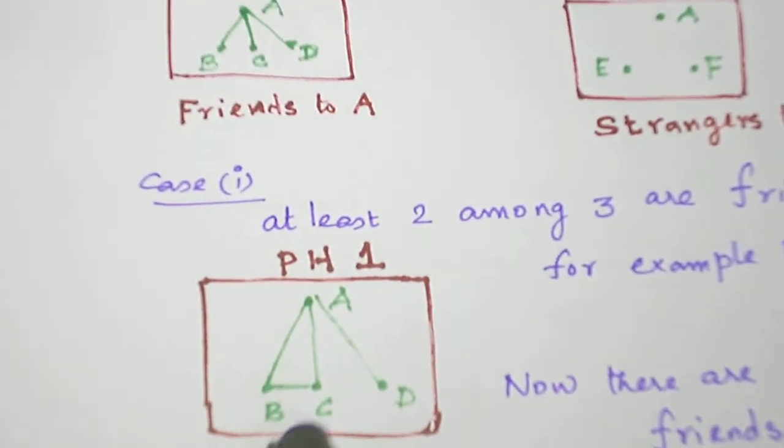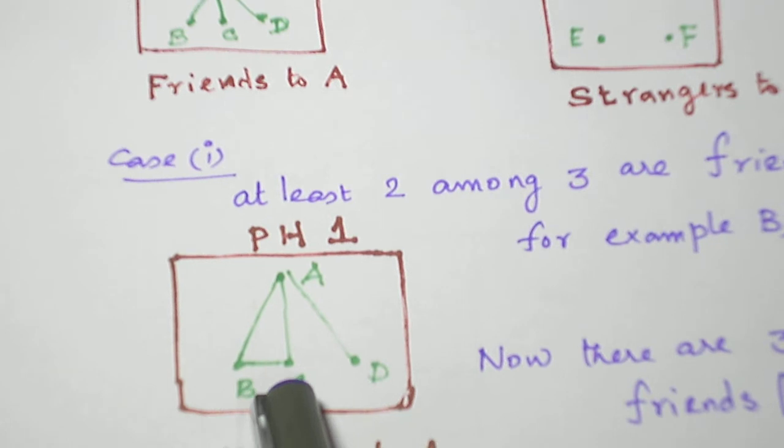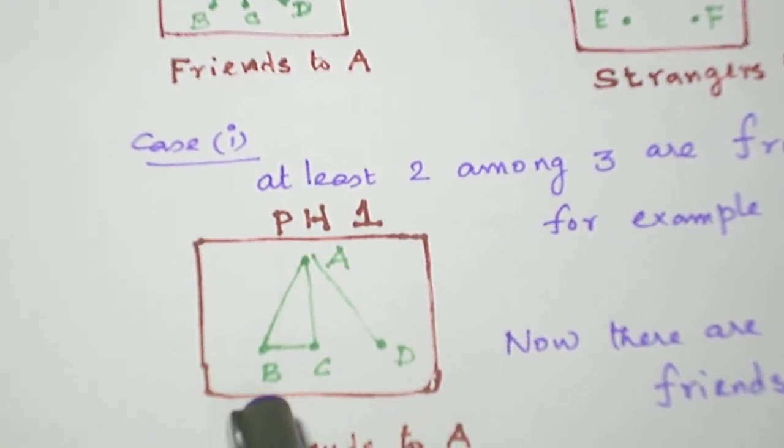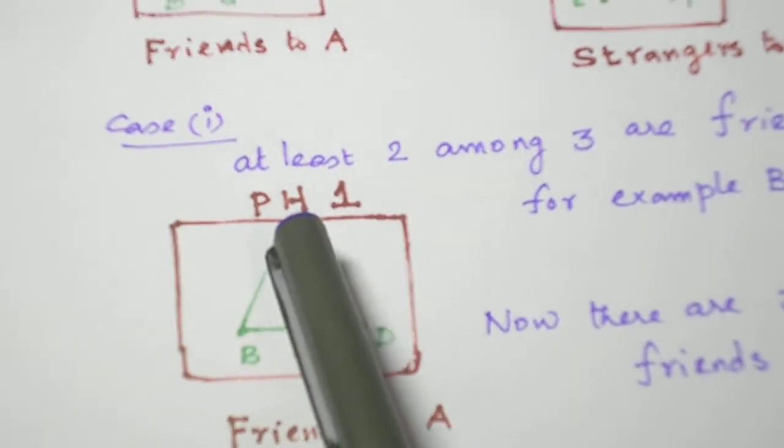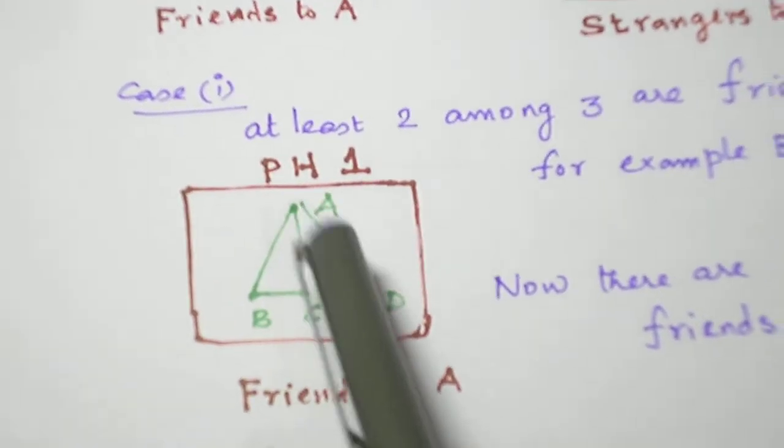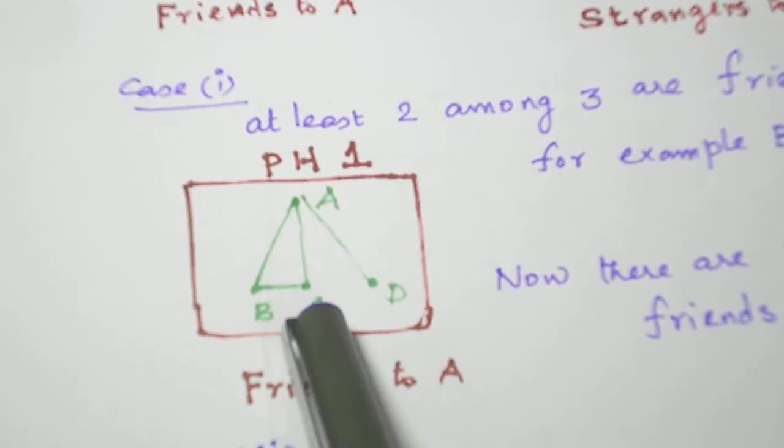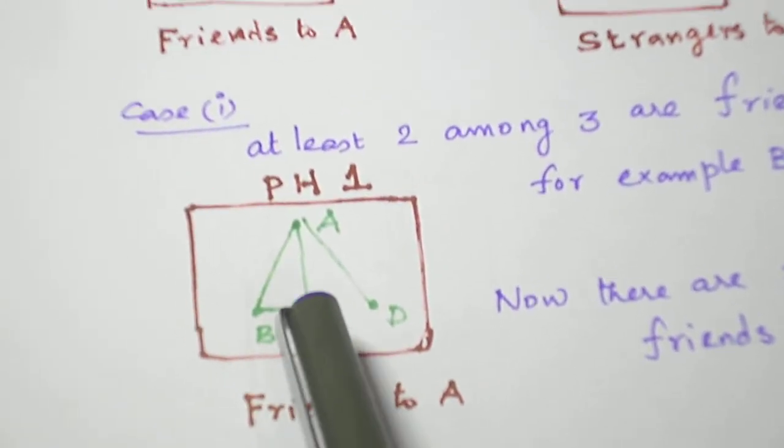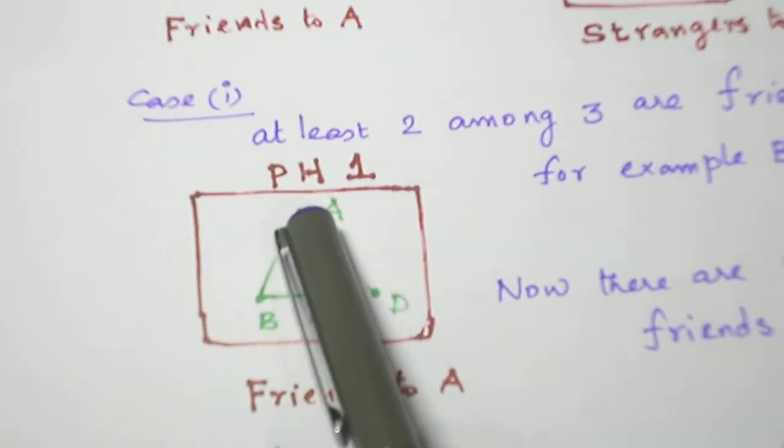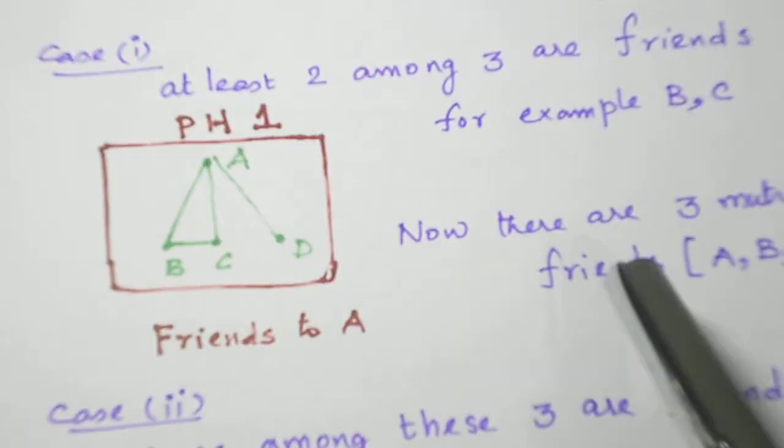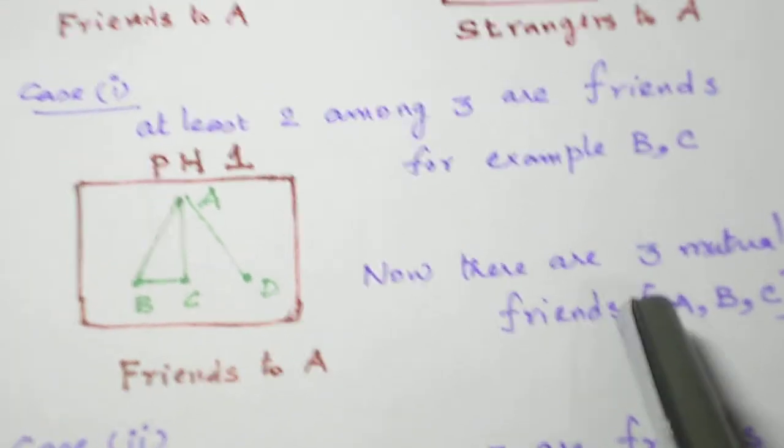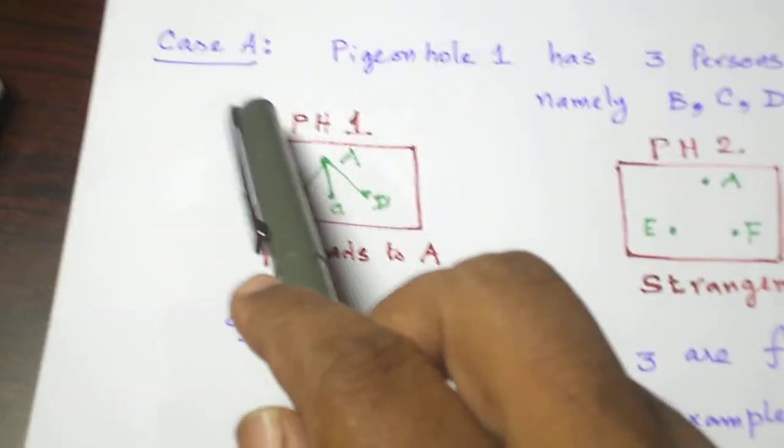So I take B and C are the persons who are mutually friends to each of them. So if you consider A is friend to B already known, A is friend to C already known, B and C are now we assume are friends to each other. So A, B, C are mutually friends. So we got 3 mutual friends in case 1 of case A.